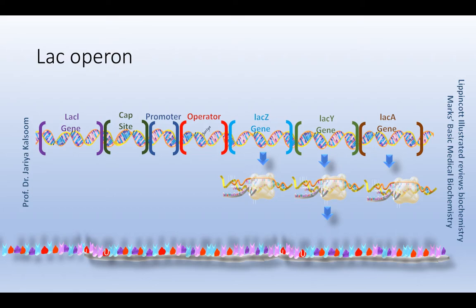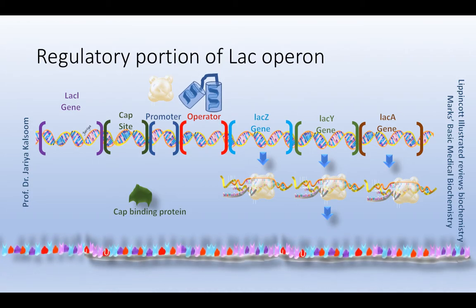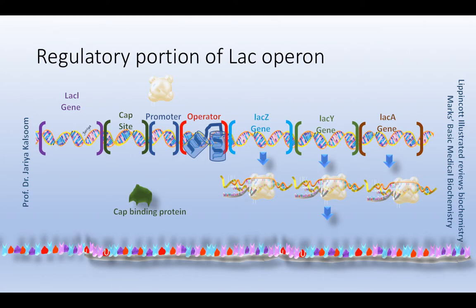The proteins are produced when lactose is available and glucose is not, because bacteria prefer to use glucose if it is available. The regulatory portion of this operon is located upstream of these genes and consists of DNA sequences which serve as the promoter, where RNA polymerase binds; the operator, where repressor protein may bind; and the CAP site, where catabolite activator protein or CAP binds.